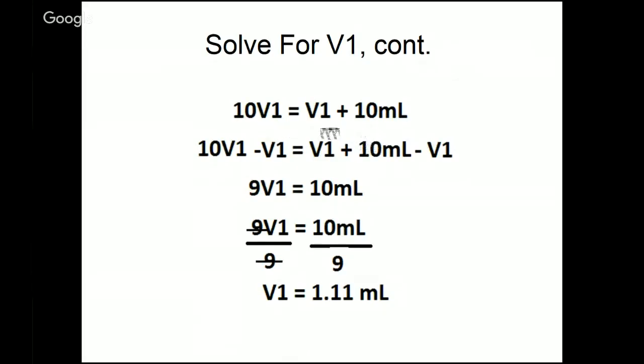Now what do I need to do? Well, really I need to consolidate the V1s in this problem. So what I'm going to do, easiest way to proceed, is to subtract V1 from both sides of this equation. So if I subtract it from this side of the equation, it just cancels out, V1 minus V1 is 0. Over here, if I subtract V1 from 10 V1, that leaves me with 9 V1. So now I have 9 V1 equals 10 mils.